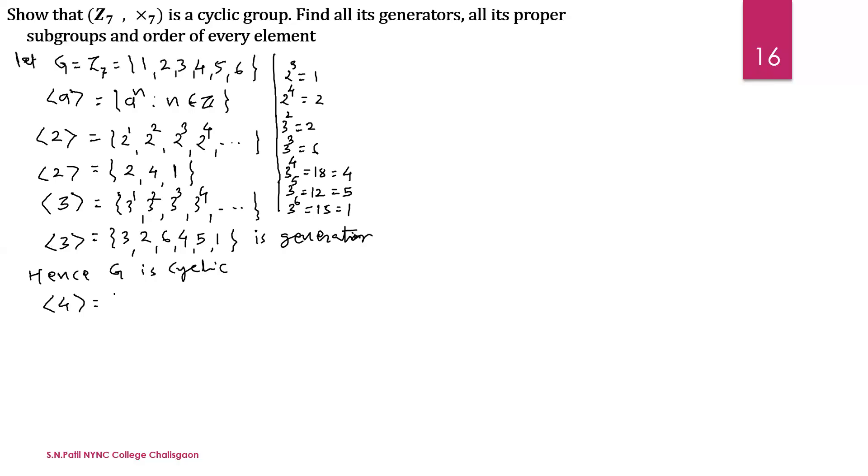Now let us find the next element: 4. It can be written as 4^1, 4^2, 4^3 and so on. 4^1 = 4; 4^2 = 16 mod 7 = 2; 4^3 = 4×2 = 8 mod 7 = 1. Then multiplying again gives 4, so it repeats. Element 4 generates only {4, 2, 1} — only 3 elements, so 4 is not a generator.